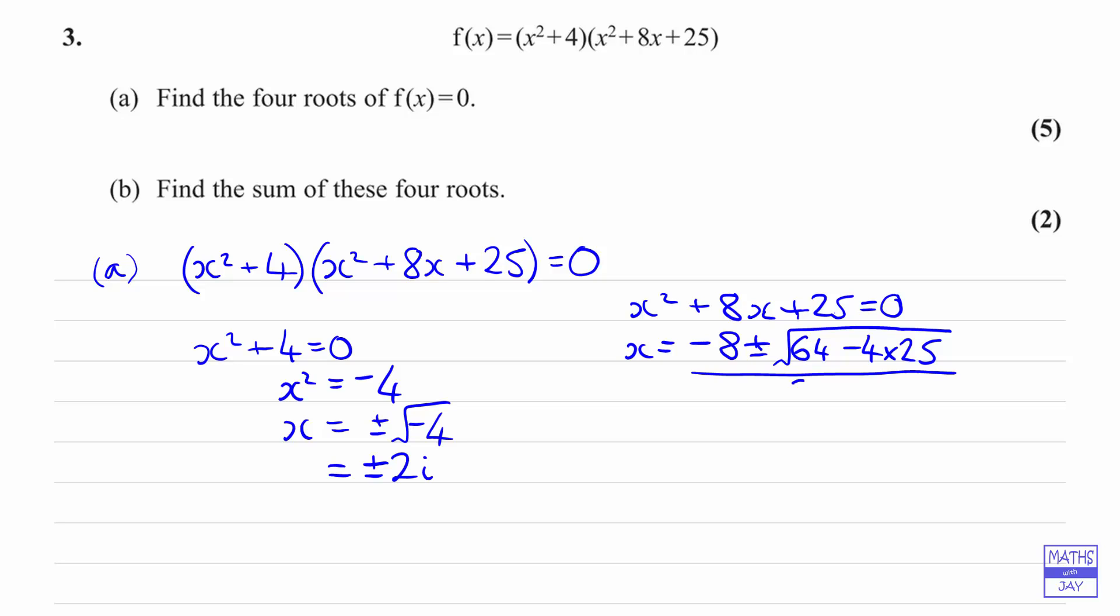Let's just simplify the discriminant. So working out 64 - 4 times 25, that's 64 - 100. So we've got the square root of -36, so again we're going to have an i coming in there, and dividing by 2.